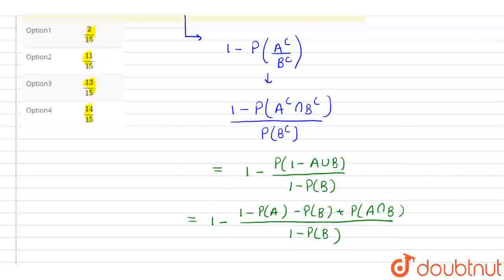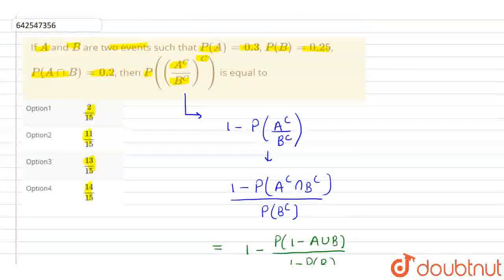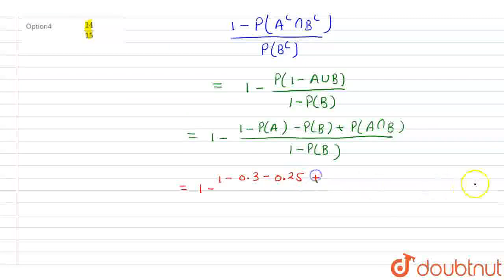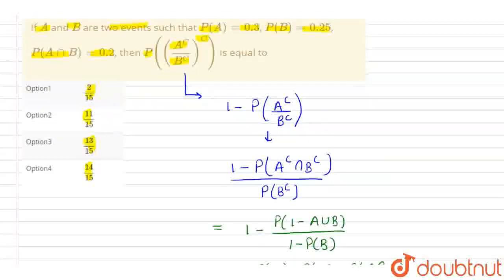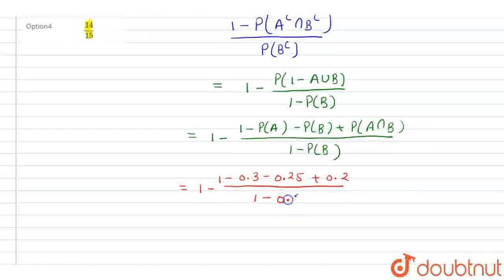Now we substitute the values: probability of A is 0.3, probability of B is 0.25, and probability of A intersection B is 0.2. So this becomes 1 minus (0.3 minus 0.25 plus 0.2) divided by (1 minus 0.25), which equals 1 minus 0.2 divided by 0.75.